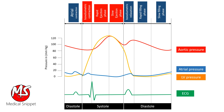When we translate this to right atrial pressure, the jugular venous pulse can be studied. The A wave corresponds to atrial contraction. The C wave corresponds to bulging of the closed tricuspid valve into the right atrium during isovolumetric contraction of the right ventricle. The V wave is due to passive atrial filling.